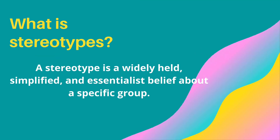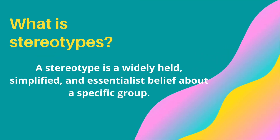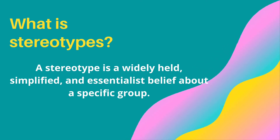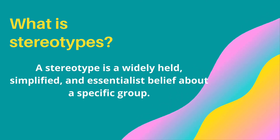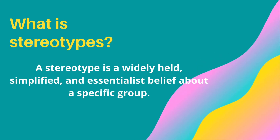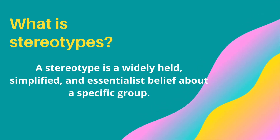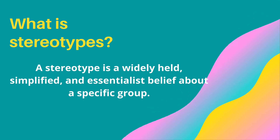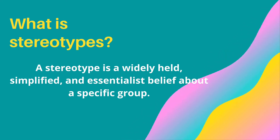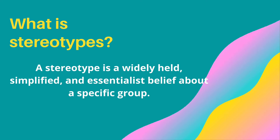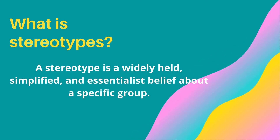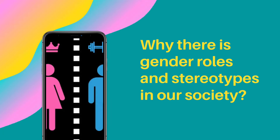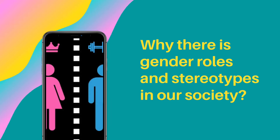Now what is stereotype? A stereotype is a widely held, simplified, and essentialist belief about a specific group. Groups are often stereotyped on the basis of sex, gender identity, race, ethnicity, nationality, age, socioeconomic status, language, and so forth. Now why is there gender roles and stereotypes in our society?